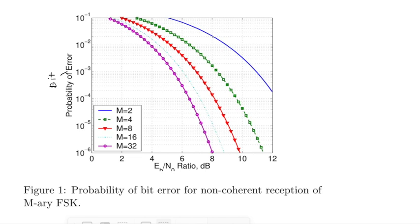Let's take a particular EB over N-knot ratio, say 8. As you get M changing from 2 to 4 to 8 to 16 to 32, that probability of bit error is going down almost a decade every doubling of M. And that's great. That is unlike any other modulation we study.